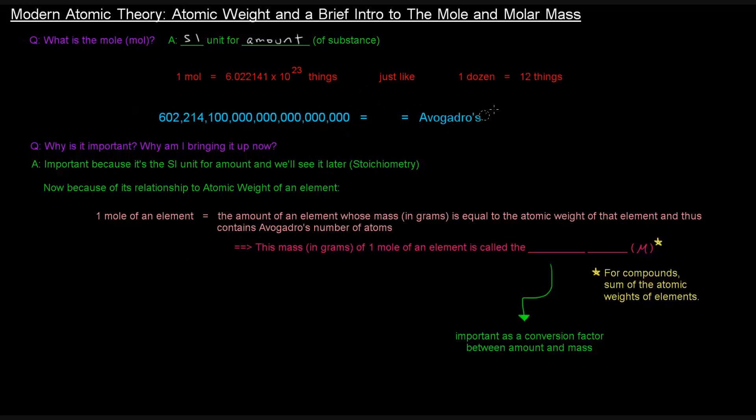It's actually Avogadro's number. Dude came up with it, and Avogadro's number is abbreviated as N subscript A. But why is this important? Why am I bringing it up now? Who cares?